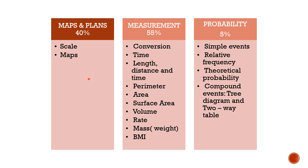For Paper 2, under Maps and Plans, you will be tested on scales and maps. Under Measurement, the topics covered are: conversion, time, length, distance and time, perimeter, area, surface area, volume, rate, mass, and BMI. Probability is the same as in Paper 1.